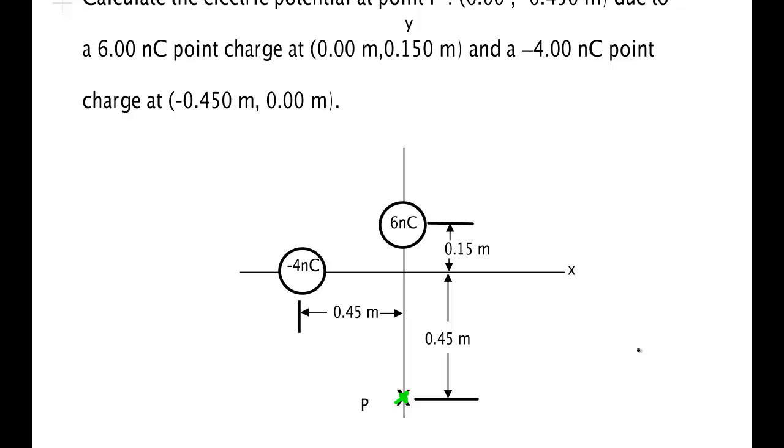Now, remember, we're talking about potential. These are scalars. So V is the voltage due to charge one and the voltage due to charge two. In charge one, I'll call this charge one, I'll call this charge two.